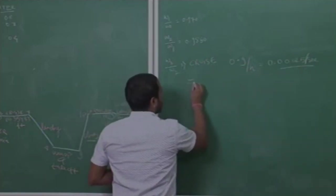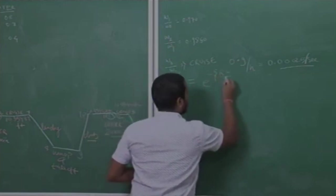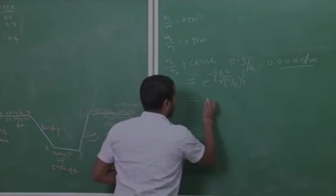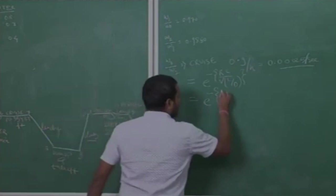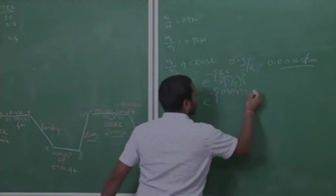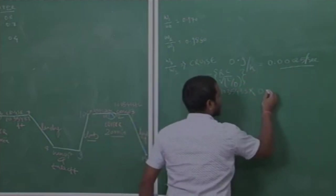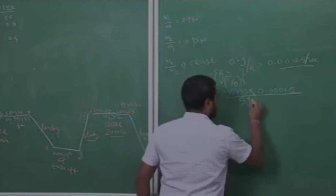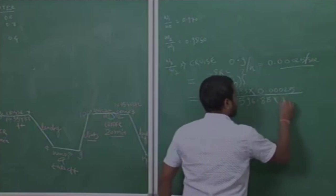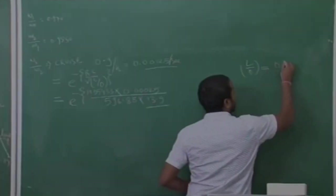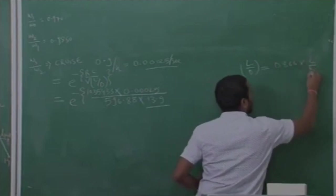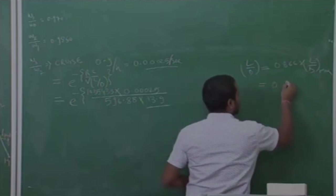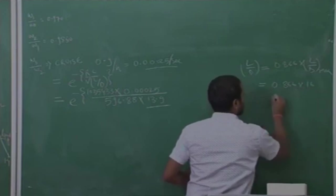For cruise condition, R times C divided by V into L by D max, L by D not max. Put the value of R, that is range, 103,543 feet into this value C, SFC, specific fuel consumption, into velocity 596.88 into 13.9, L by D 0.886, 0.866 into L by D max.